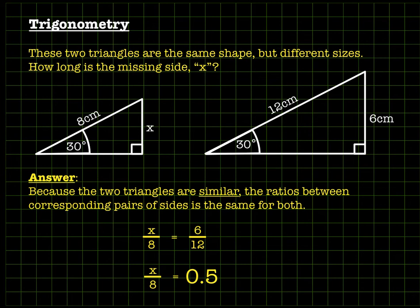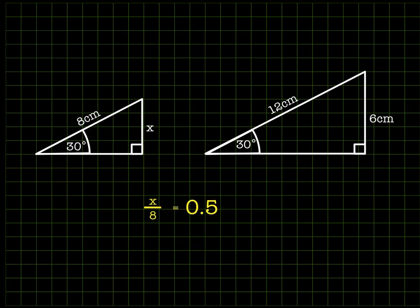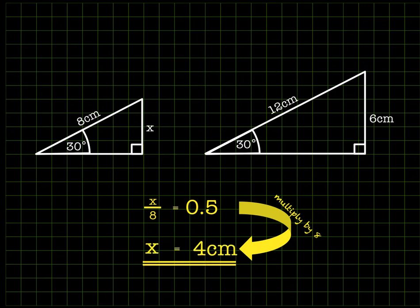6 over 12 is just a half — 0.5. So x divided by 8 is 0.5, and that's enough information to figure out what x is. We can multiply both sides by 8 to get that x is 4 centimeters. So the missing side x is 4 centimeters.